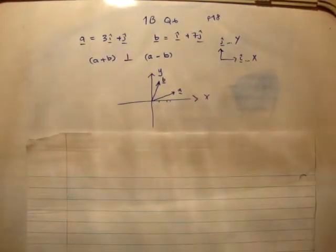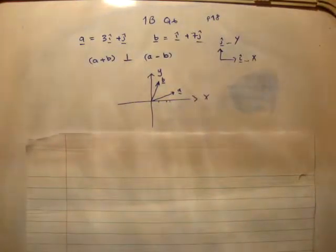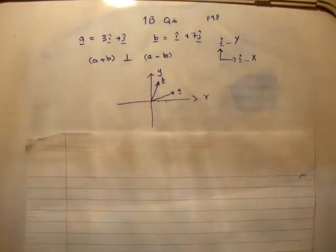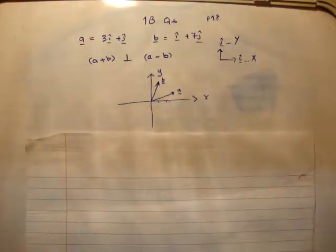Okay, in this video I'm going to do question 6 of exercise 1b on page 18 of the book Fundamental Applied Mathematics. In the question, you're given two vectors a and b. Vector a is 3i hat plus j hat, and vector b is i hat plus 7j hat.